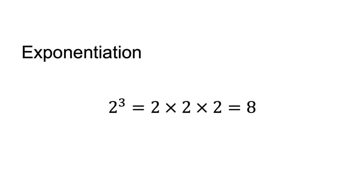For example, 2 to the power 3 is equal to 2 times 2 times 2, which equals 8. The exponent a can be any real number, including fractions and negative numbers.